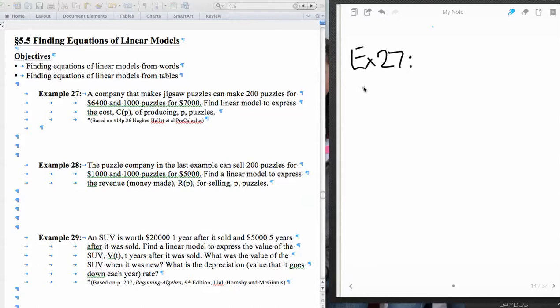So what we're given here is that our C of P, our dependent variable, that's comparable to your y variable, is the cost of producing these things. And then we have the P, the independent variable, those are the number of puzzles.